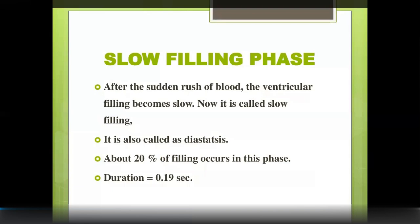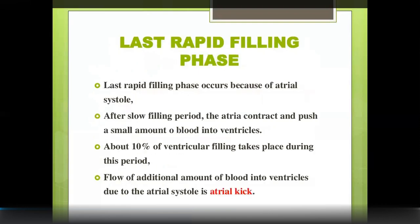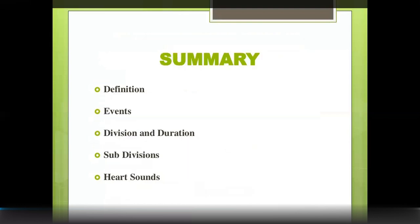During diastasis (slow filling period), about 20% of blood fills the ventricles. In total: 70% fills during rapid filling, 20% during slow filling, and the remaining 10% during atrial systole (atrial kick/last rapid filling phase). After diastasis, atrial systole contracts and pumps the remaining 10% into the ventricles.